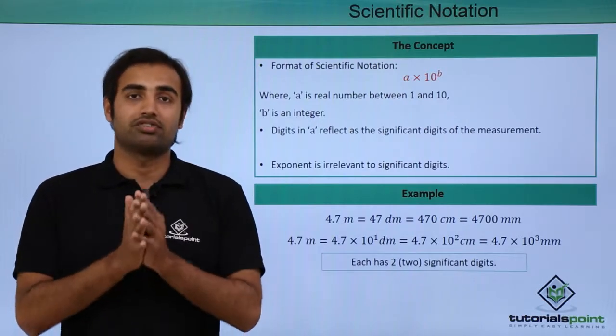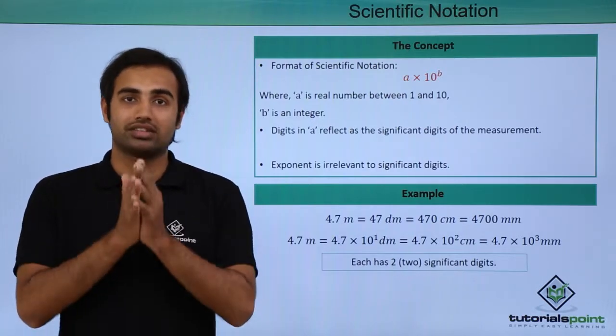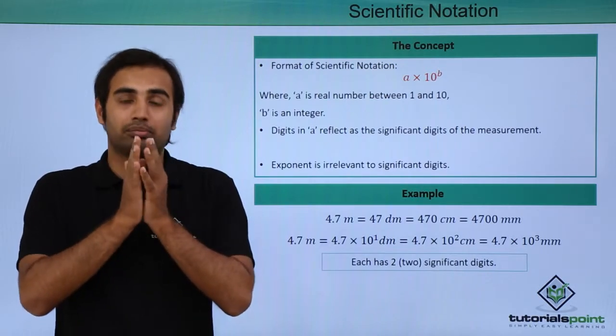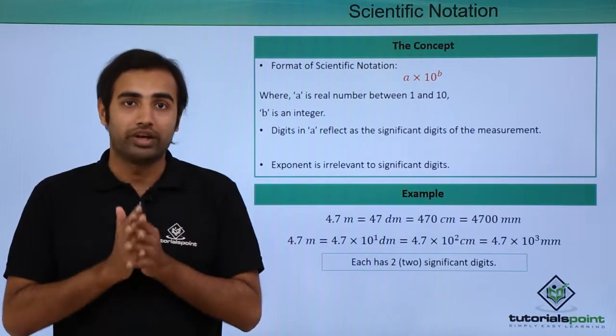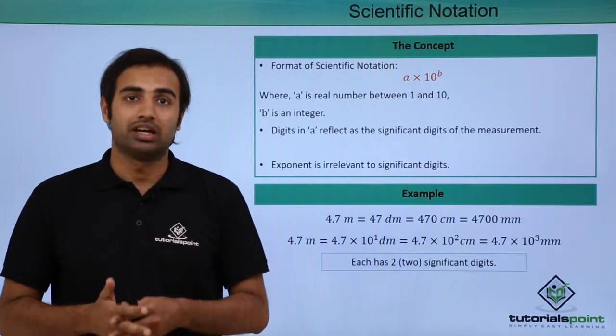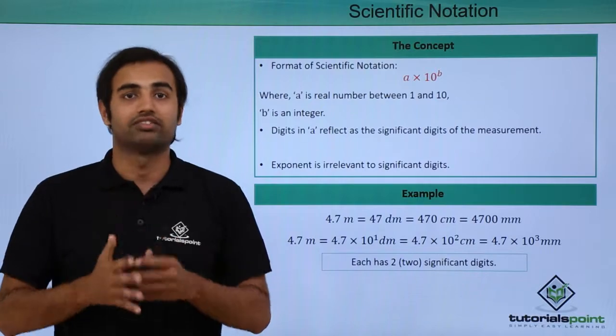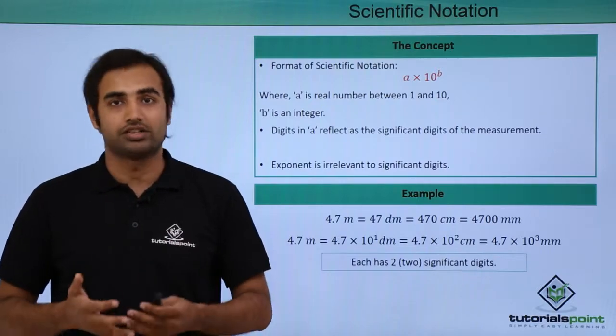That's why scientific notation is widely used and considered one of the most proper ways to express measurements, because it does not affect significant digits.